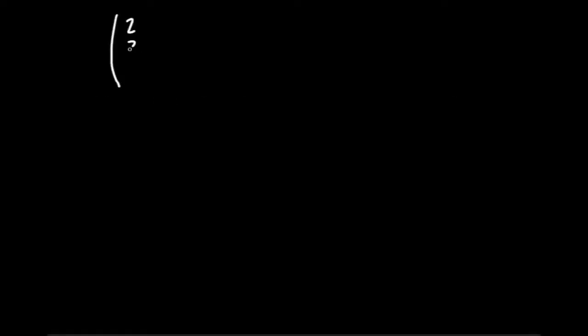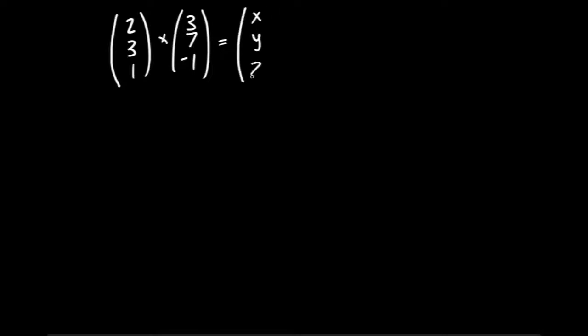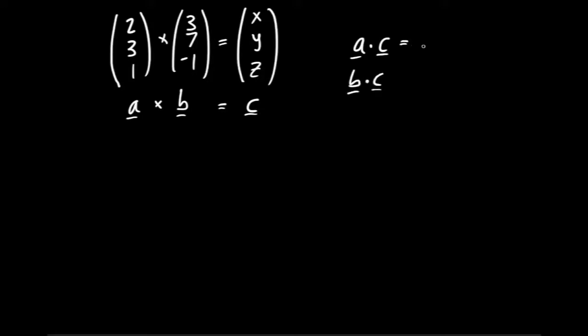Here's how to check your cross product. Take a equal to 2, 3, 1 and b equal to 3, 7, minus 1. There's a very useful property: a dotted with c should equal 0, and b dotted with c should also equal 0. Either of the input vectors dotted with the correct cross product c gives 0. Let's work out c. First component: ignore first elements, falling diagonal gives 3 times minus 1 minus 1 times 7 equals minus 3 minus 7 equals minus 10. Second component: rising diagonal gives 1 times 3 minus 2 times minus 1 equals 3 plus 2 equals 5. Third component: falling diagonal gives 2 times 7 minus 3 times 3 equals 14 minus 9 equals 5. So c equals minus 10, 5, 5.